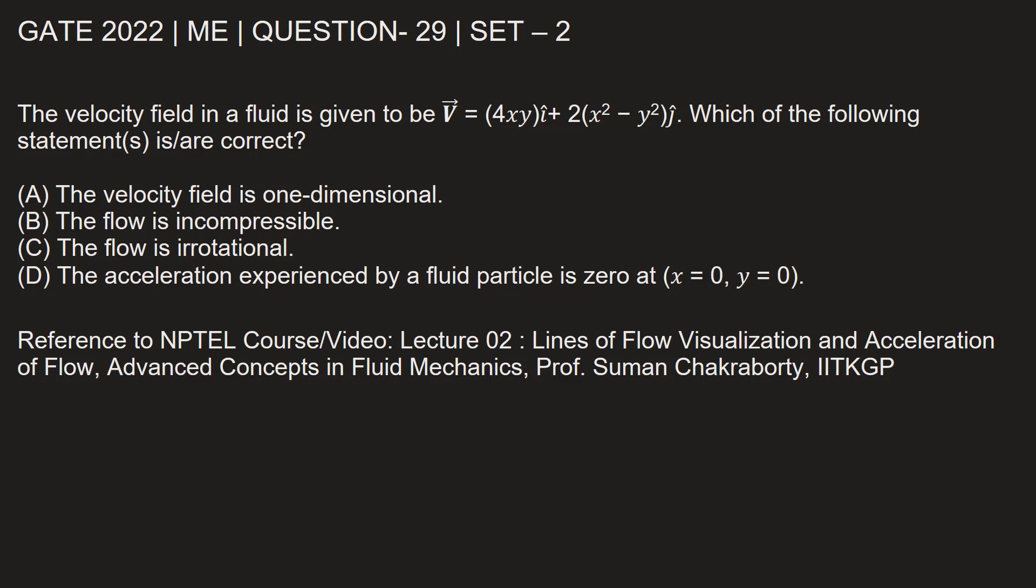This question is from GATE 2022 Mechanical Engineering paper, Set 2, Question Number 29. The velocity field in a fluid is given to be vector V as 4xy i plus 2 times x squared minus y squared j.